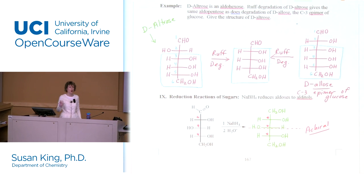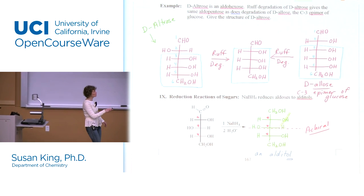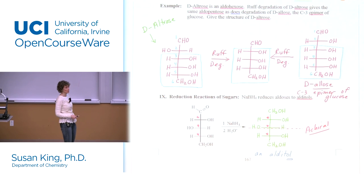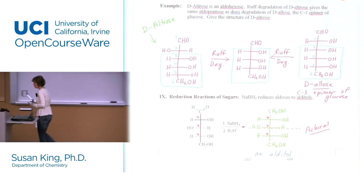So we left off last time almost finishing talking about reactions of sugars and we ended with reduction and so this is an alditol. You can see the OL is for alcohol. When you reduce that sugar you turn it into something that's achiral so even though it has three stereocenters it has a plane of symmetry so it is actually achiral.